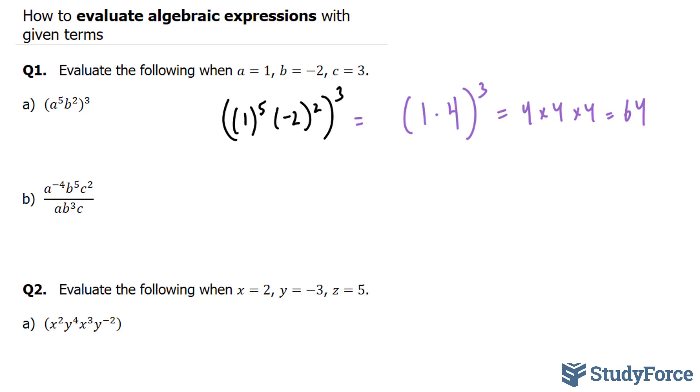Let's move on to b. This time, I'll replace a, b, and c. a is 1, 1 to the power of negative 4. b is negative 2. So I'm going to replace that b with negative 2 to the power of 5. And c will be replaced with 3 to the power of 2. The same thing will be done to the denominator. 1 times negative 2 to the power of 3, and c is 3.